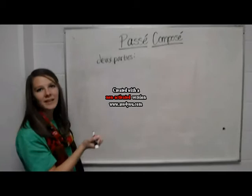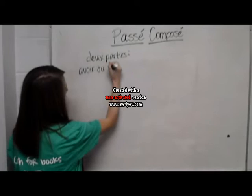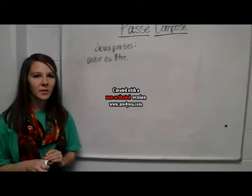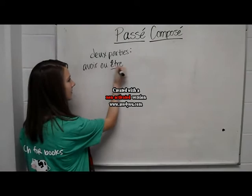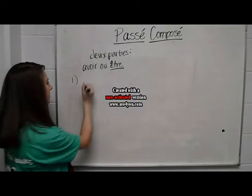The first part is going to be the conjugated form of avoir or être in the present. For most verbs, you're going to use avoir. However, there are certain verbs in which you want to use être. The first group of verbs in which you use être are going to be verbs of motion.